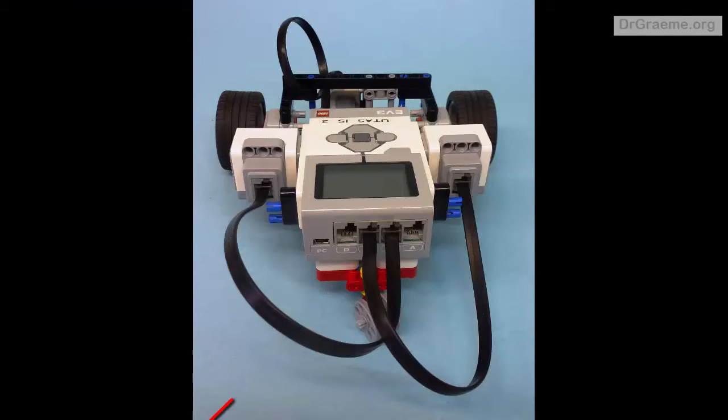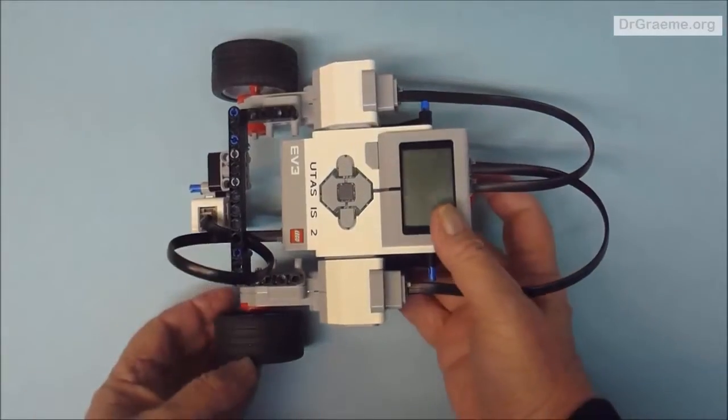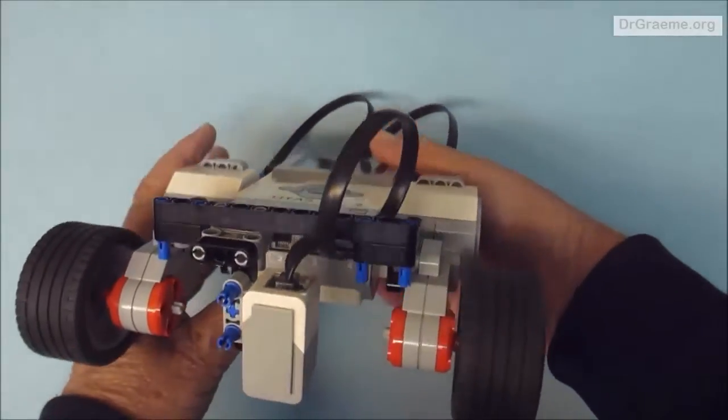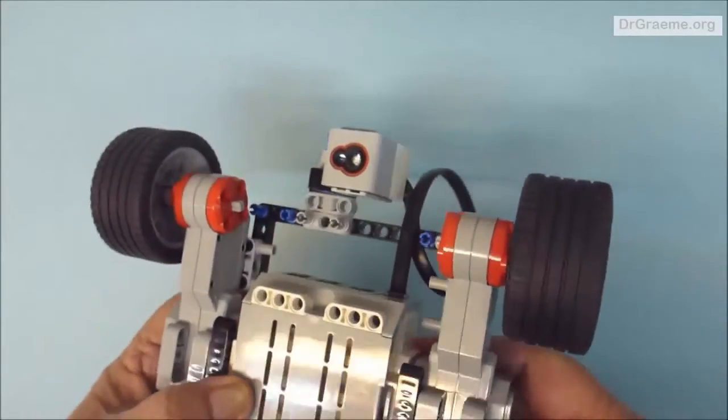YayaBot has a third wheel, and because the education and the home sets are different, we have to make different third wheels for the two sets. Both versions of YayaBot are the same at the front.